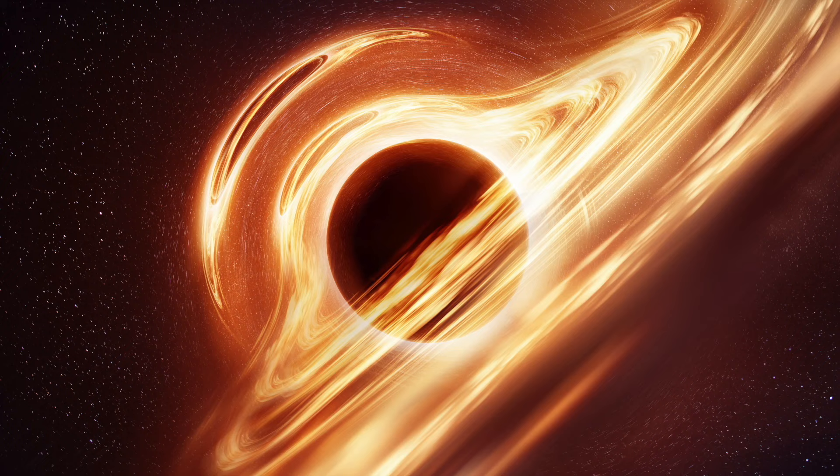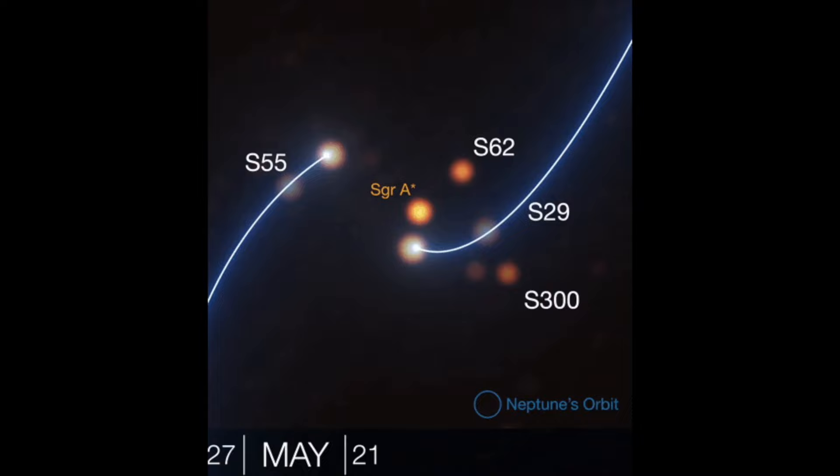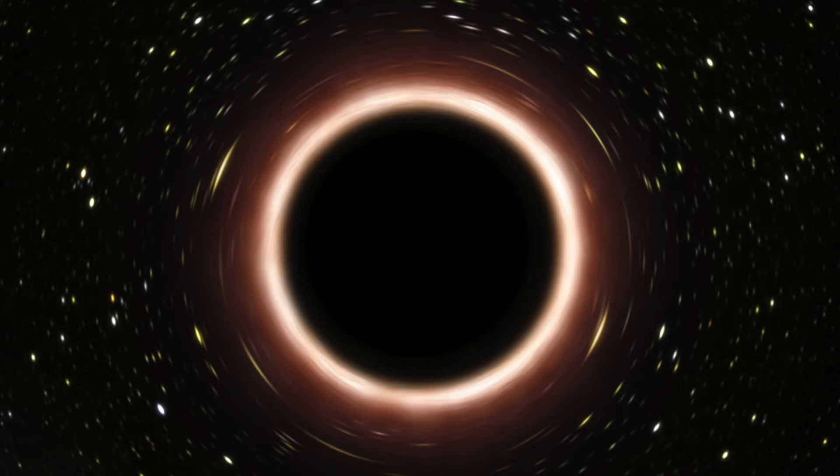Notably, the orbits of these stars have provided valuable insights into the physical properties of Sagittarius A-star. The high velocities and tight orbits of the S-stars are beneficial for investigating various aspects of Sagittarius A-star, such as determining its dimensions and observing general relativity-related effects like the shift in periapsis of their orbits. These stars serve as unique probes of the black hole's environment, shedding light on its gravitational influence.